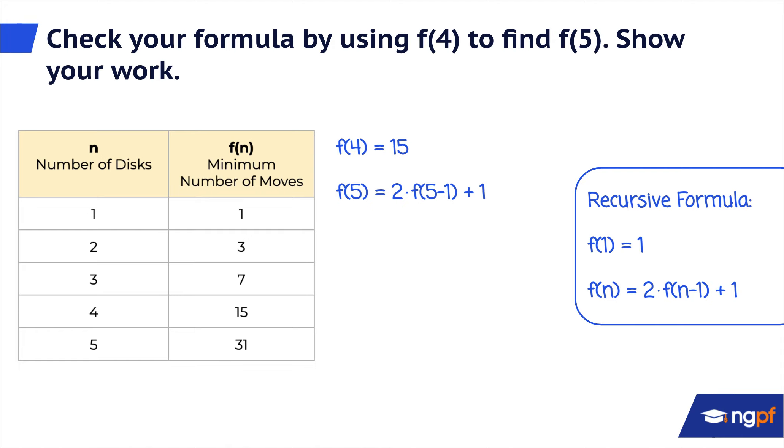f of 5 equals 2 times f of 5 minus 1 plus 1. We can simplify that to f of 5 equals 2 times f of 4 plus 1. Plug in our value for f of 4 to solve. f of 4 is 15. So now we have f of 5 equals 2 times 15 plus 1. That gives us a final answer of f of 5 equals 31.